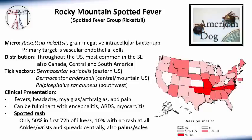Rocky Mountain Spotted Fever, also called one of the spotted fever group rickettsioses, is caused by Rickettsia rickettsii. We're learning that other rickettsial agents in the spotted fever group probably cause similar clinical syndromes, but are not caused by Rickettsia rickettsii itself. It is a gram-negative intracellular bacterium whose primary target is vascular endothelial cells. Many symptoms of Rocky Mountain Spotted Fever are due to vascular endothelial damage and often resemble vasculitis.